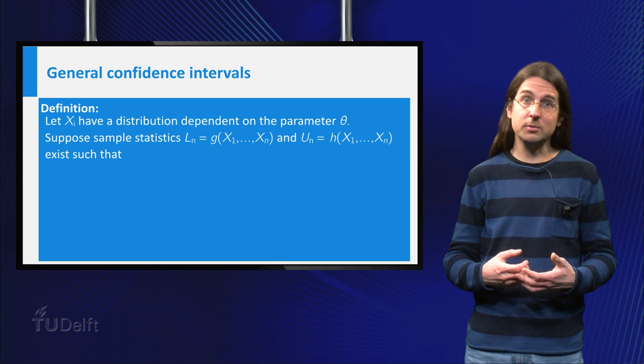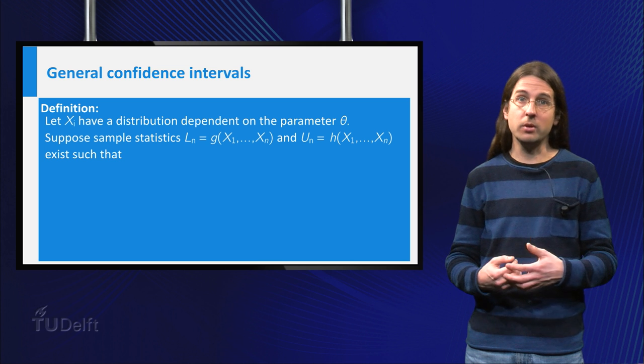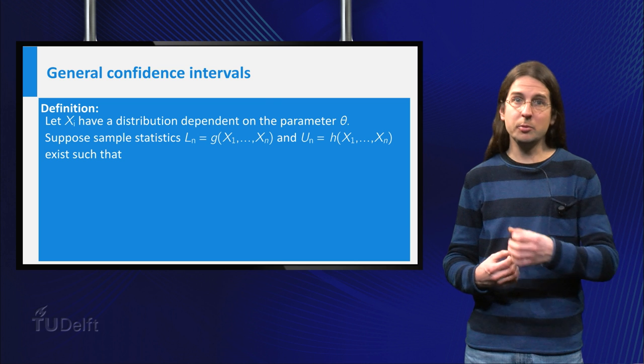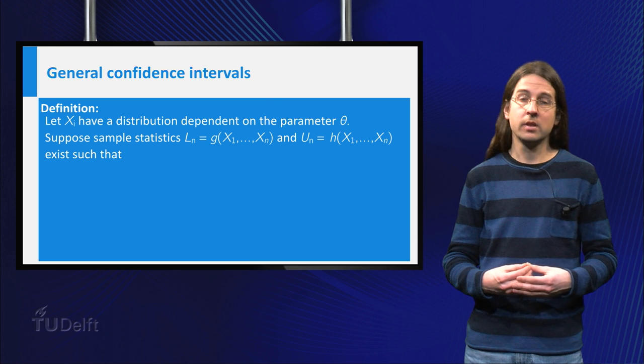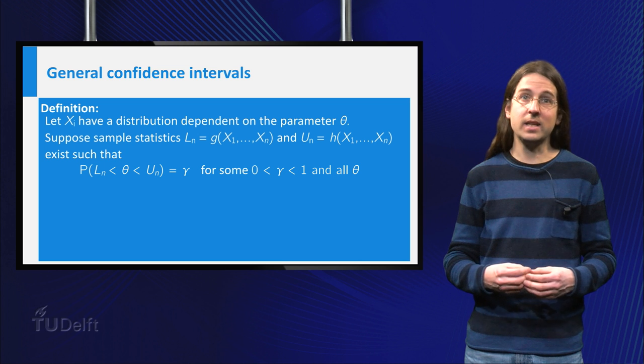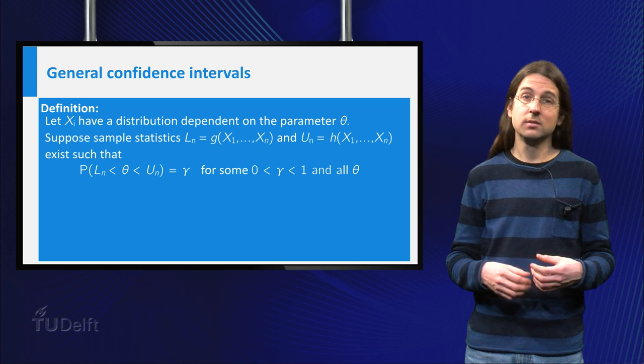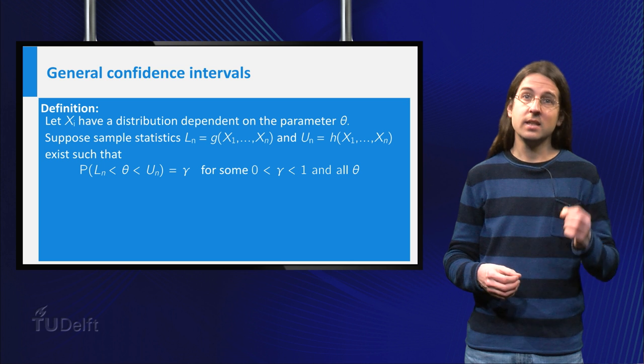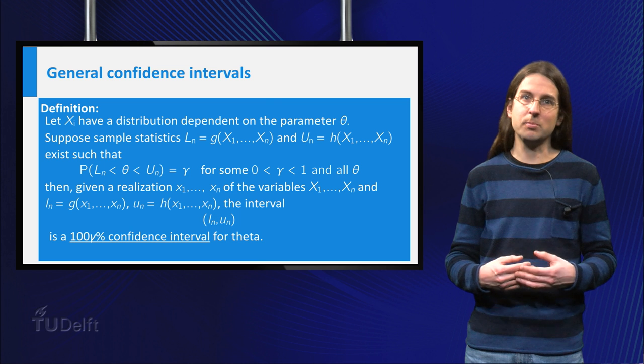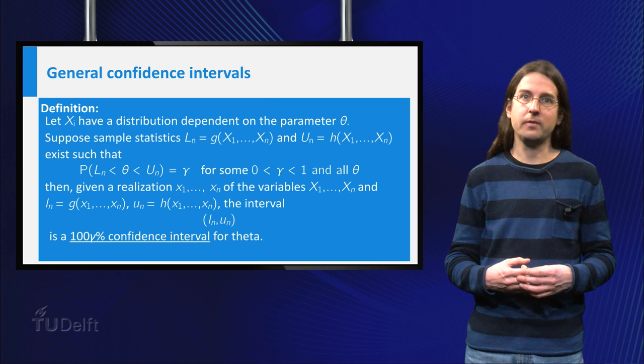we can define two sample statistics, ln and un, dependent on these Xi as lower and upper bound of an interval. If the probability that this interval contains theta equals gamma for all values of theta, then we say that the realization of this interval is a 100 gamma percent confidence interval for theta.